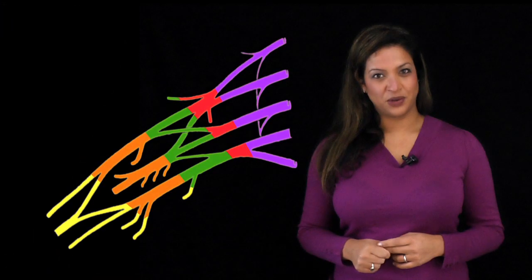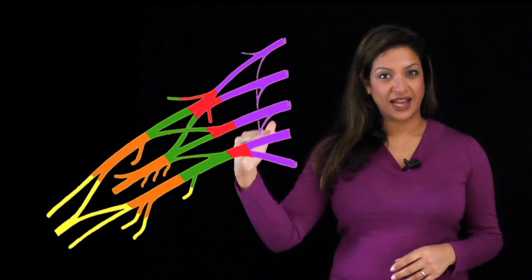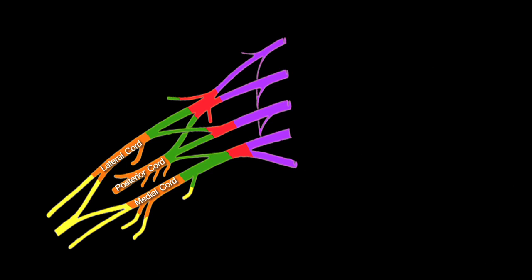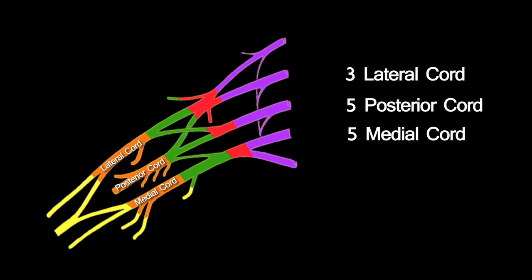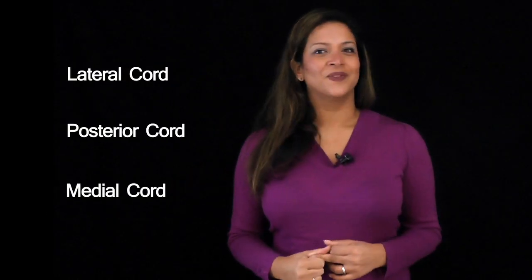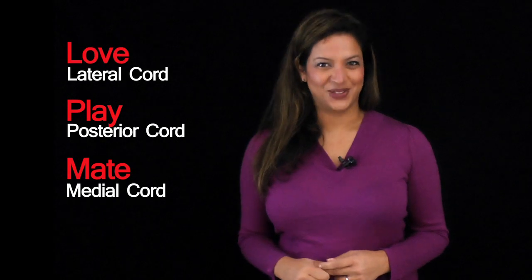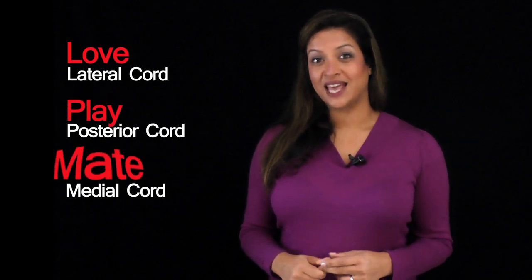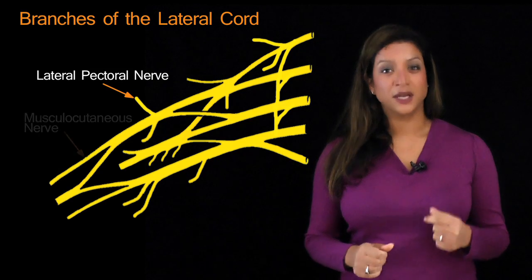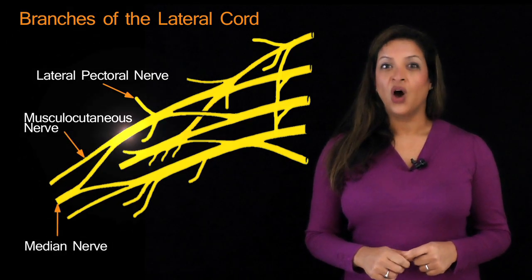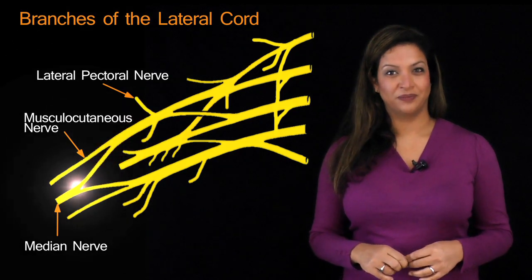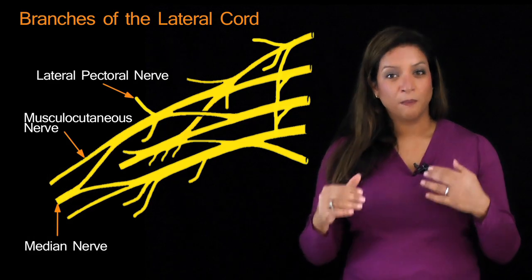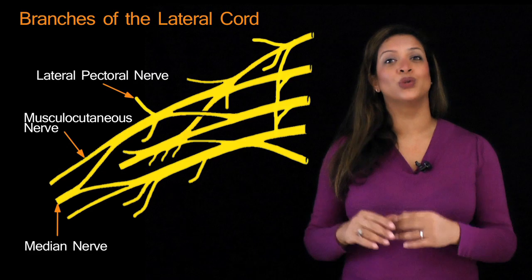Now we're on to the cords. There are 3 cords — lateral, posterior and medial — with 3, 5 and 5 branches respectively. To remember the order, use the mnemonic: Love Playmate — L for lateral, P for posterior, M for medial. The 3 branches of the lateral cord are the lateral pectoral nerve, the musculocutaneous nerve, and the contribution from the lateral cord to the median nerve.